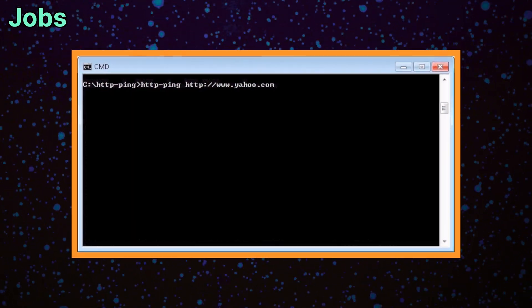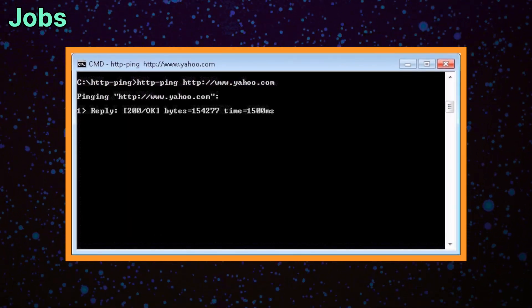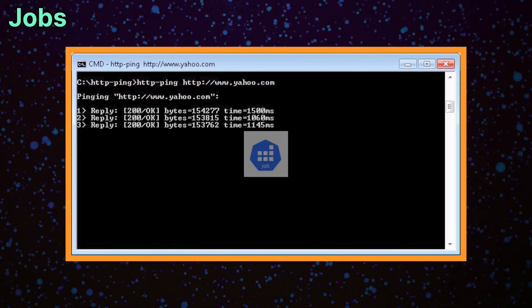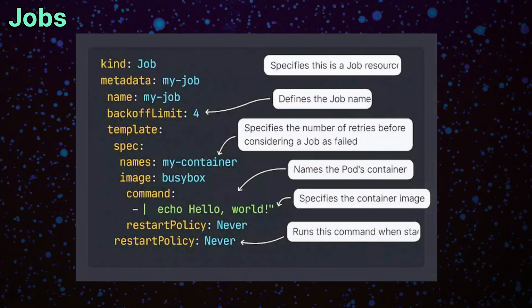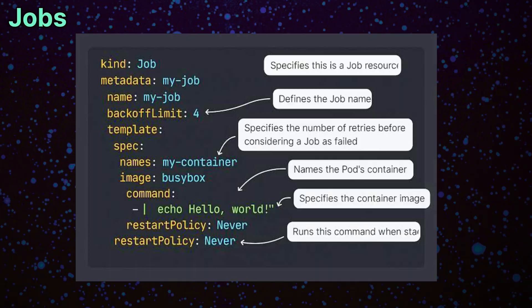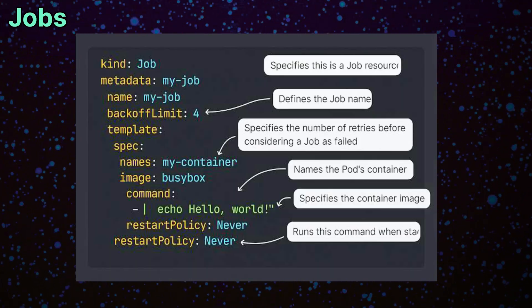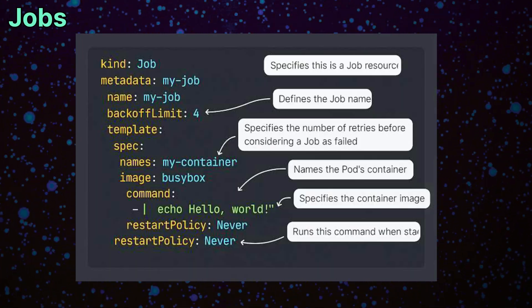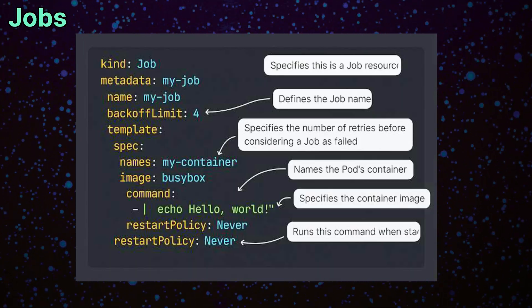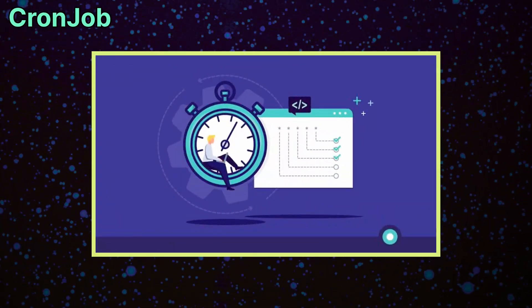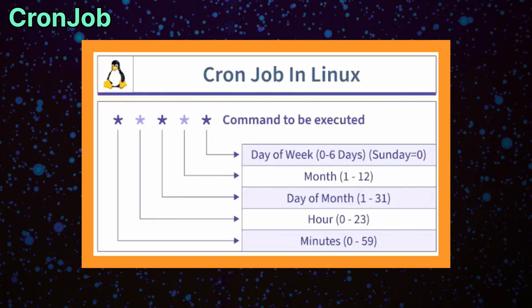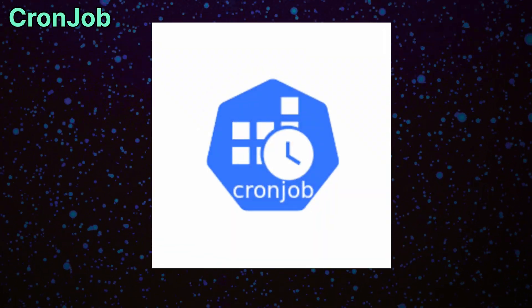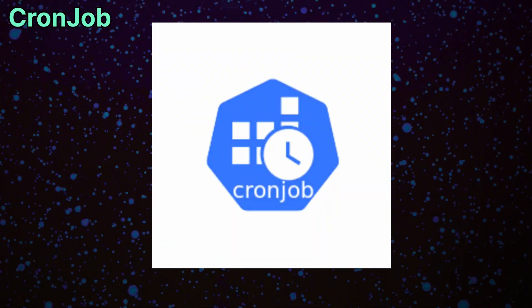If you need to run something once and then stop, you can use a job. Jobs in Kubernetes are used to run pods that perform finite tasks and terminate when completed. And if you want to run a job on a schedule, like a cron job in Linux, you can use a cron job object.